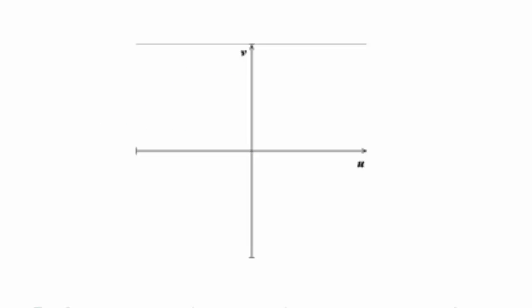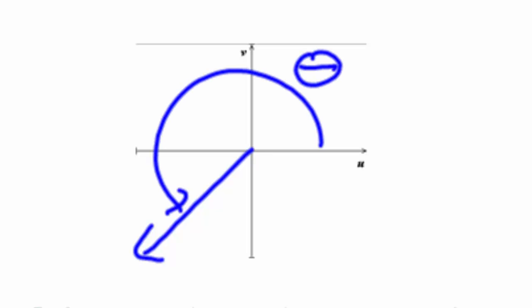If my terminal side lies in the third quadrant, theta would look like this. And the reference angle, again, is between the horizontal axis and the terminal side—the positive acute angle.